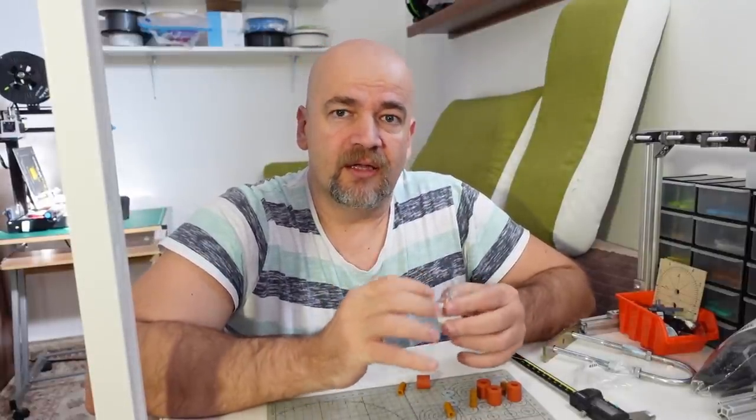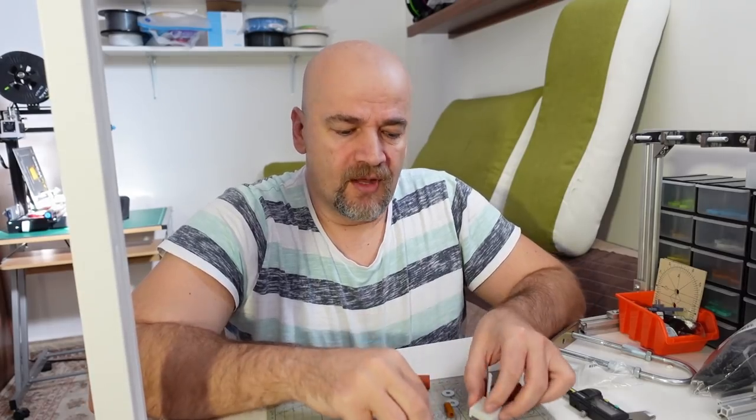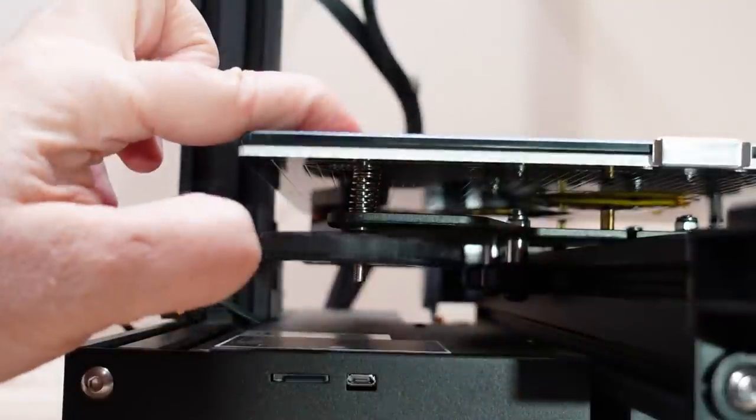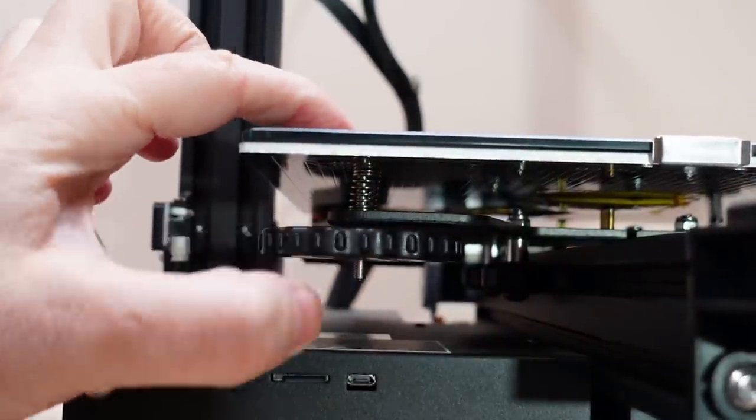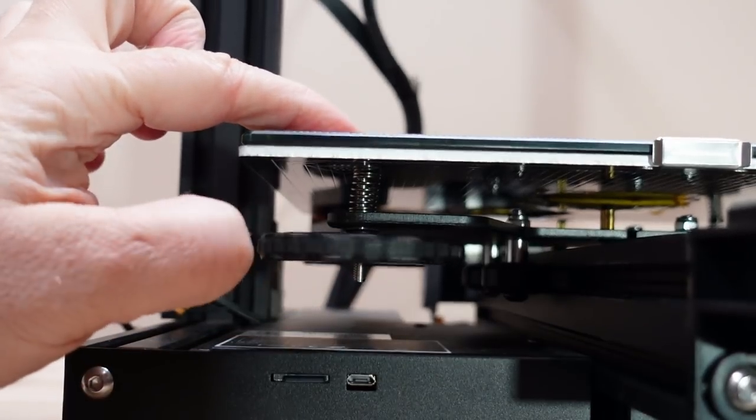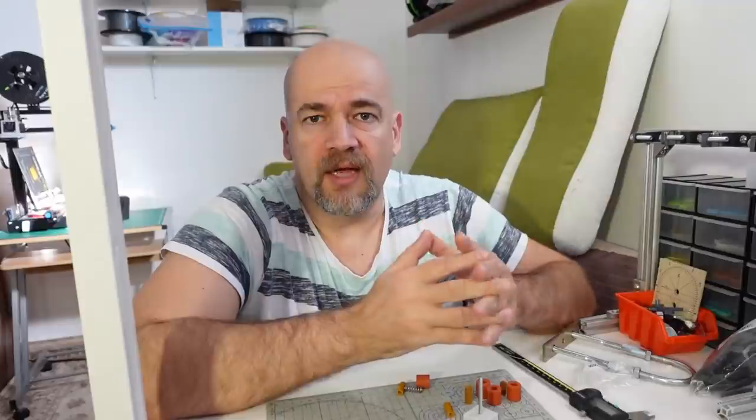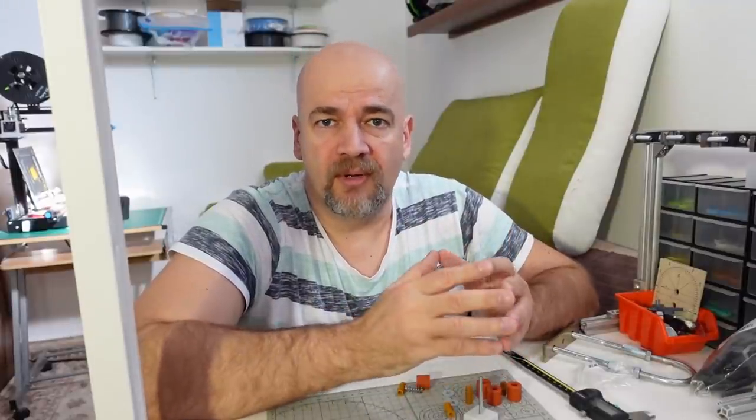Now it's very important that the knob stays in place, but during printing we have vibrations. Because of those vibrations, the knob may unroll a little bit slowly, and from time to time we have to re-level the bed again.